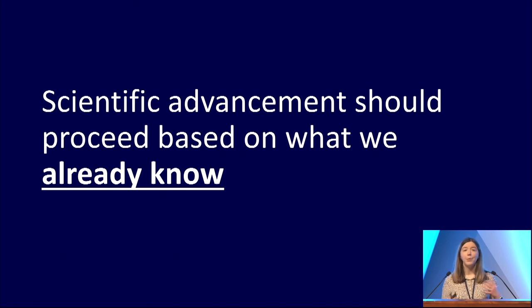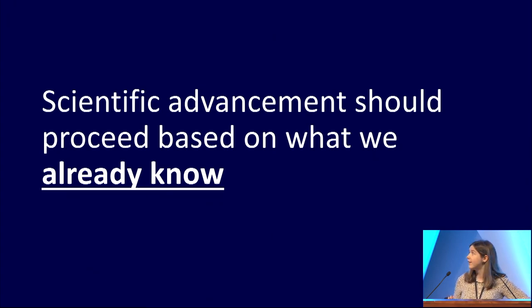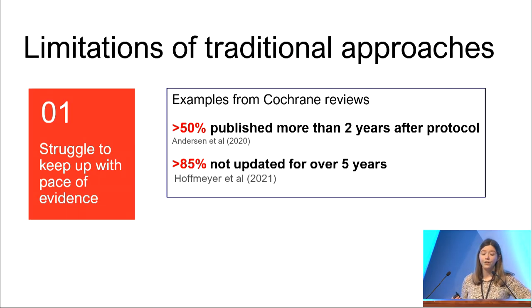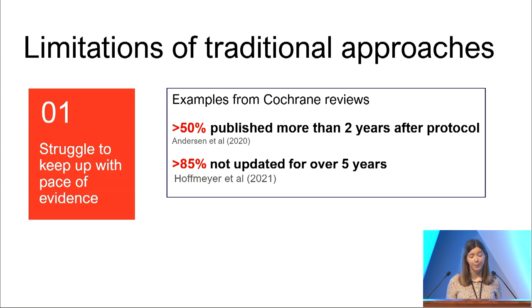We've identified, when doing our research over a number of years in preclinical meta-research and systematic reviews, three key limitations or challenges to traditional systematic review approaches. The first is that there's a struggle to keep up with the pace of evidence generation. Systematic reviews are really resource and time-intensive, and especially in research-intensive areas, there are just so many new papers being published every year that it's really difficult to keep up.